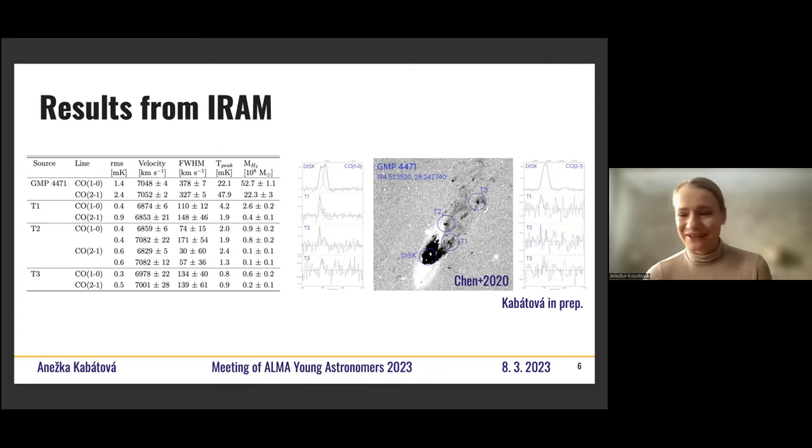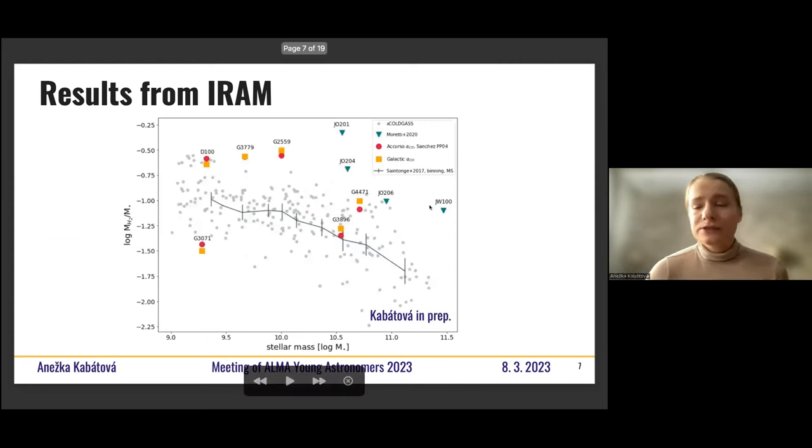And you can see in the left and right CO 1-0 and CO 2-1 results respectively. So you can see there are very nice detections or, you know, we are talking about radio. So they are very nice for me. And then we evaluated the amounts and other properties of this gas in the disk and outside of it.